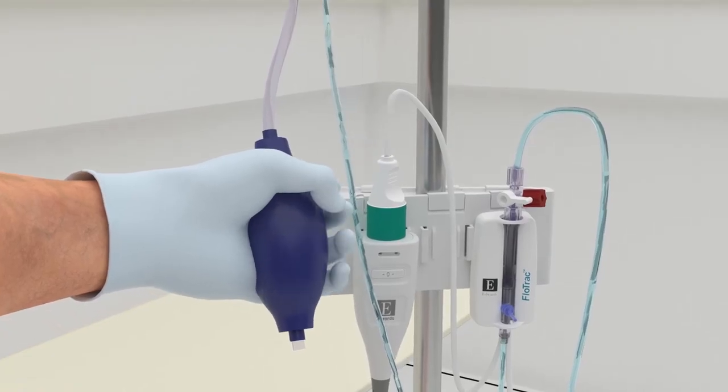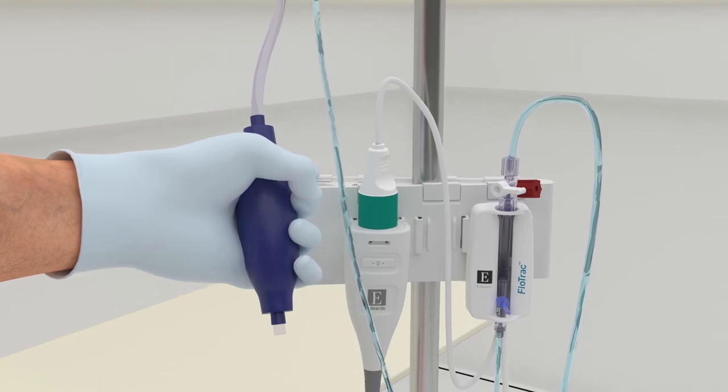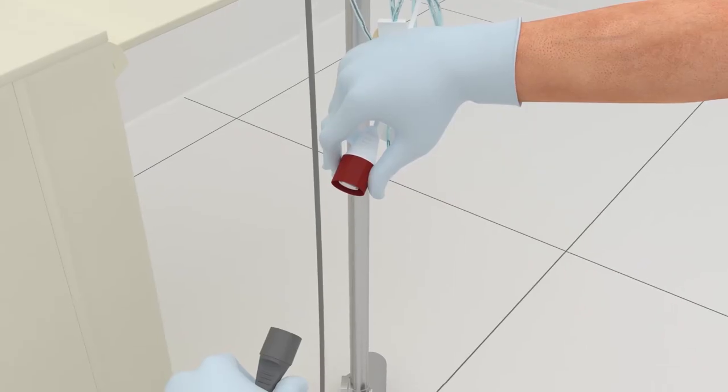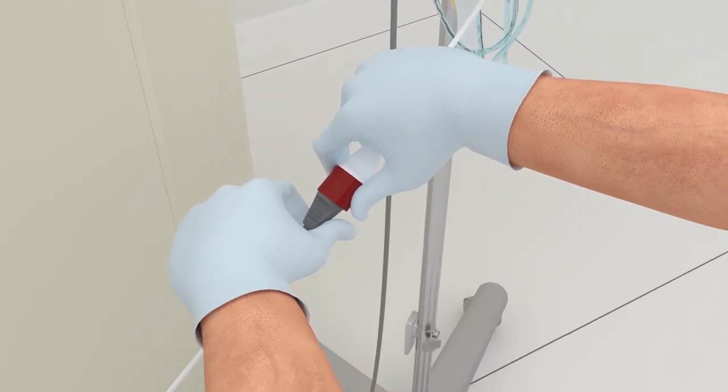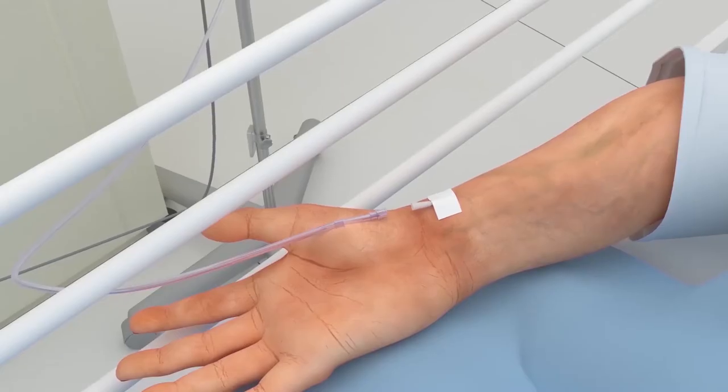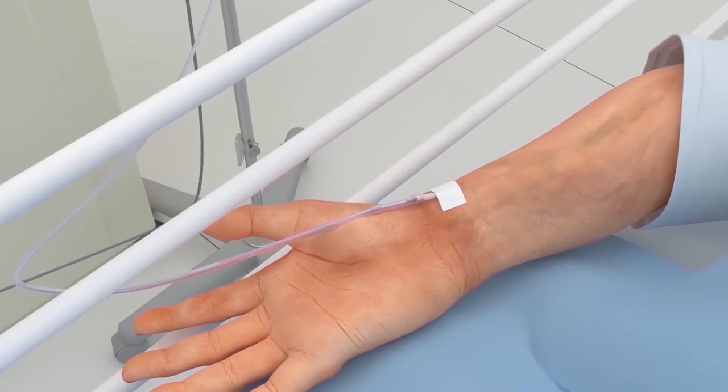Pressurize the pressure bag until it reaches 300 millimeters of mercury. Connect the bedside monitor's arterial pressure cable to the red cable connector on the FlowTrack sensor. Connect the tubing to the arterial catheter.